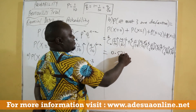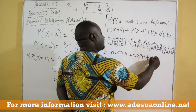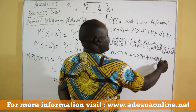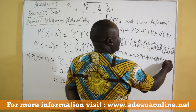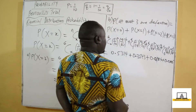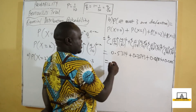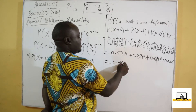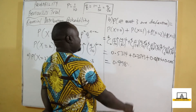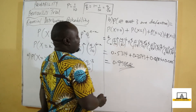When we calculate each term, we get 0.5314, plus 0.3543, plus 0.0984, plus 0.0145. When we add all of these together, our final answer is 0.99868.